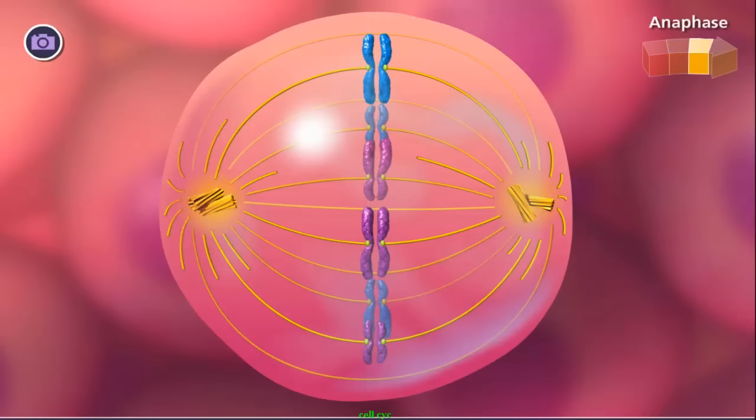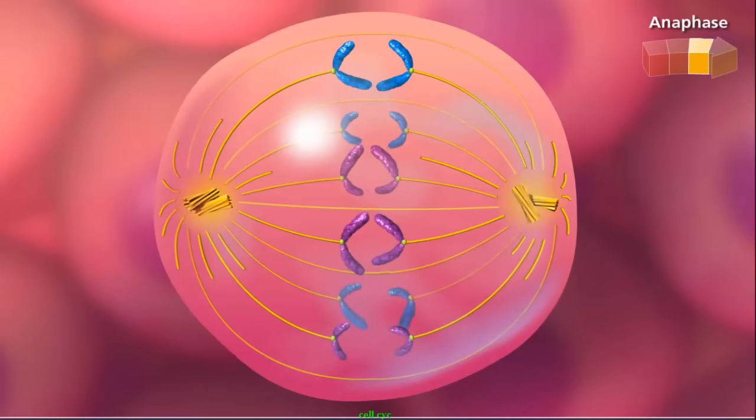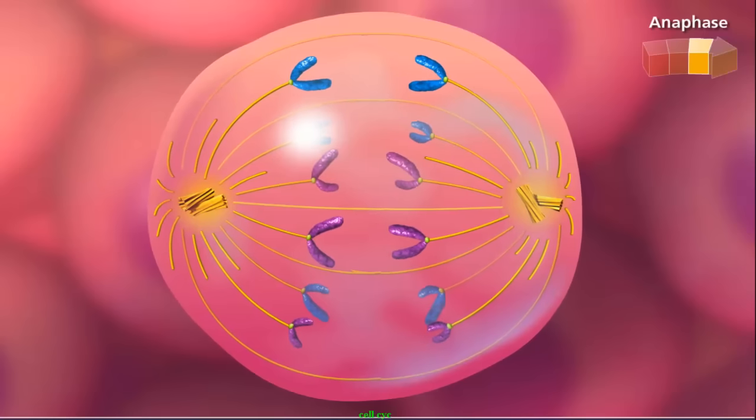Anaphase begins with the degradation of proteins that hold sister chromatids together, freeing individual chromosomes. The free chromosomes are then pulled by their kinetochores to opposite poles.